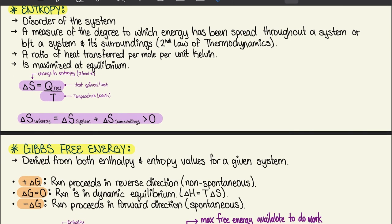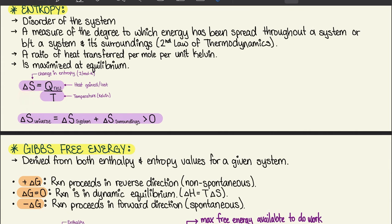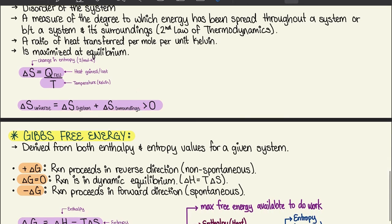Moving to 7.5 — entropy is the measure of disorder, or more precisely, the degree to which energy has been spread throughout a system or between a system and its surroundings, which gives us the Second Law of Thermodynamics. The equation is ΔS = q_rev / T (in J/mol·K), and is maximized at equilibrium. We can also write: ΔS_universe = ΔS_system + ΔS_surroundings > 0.